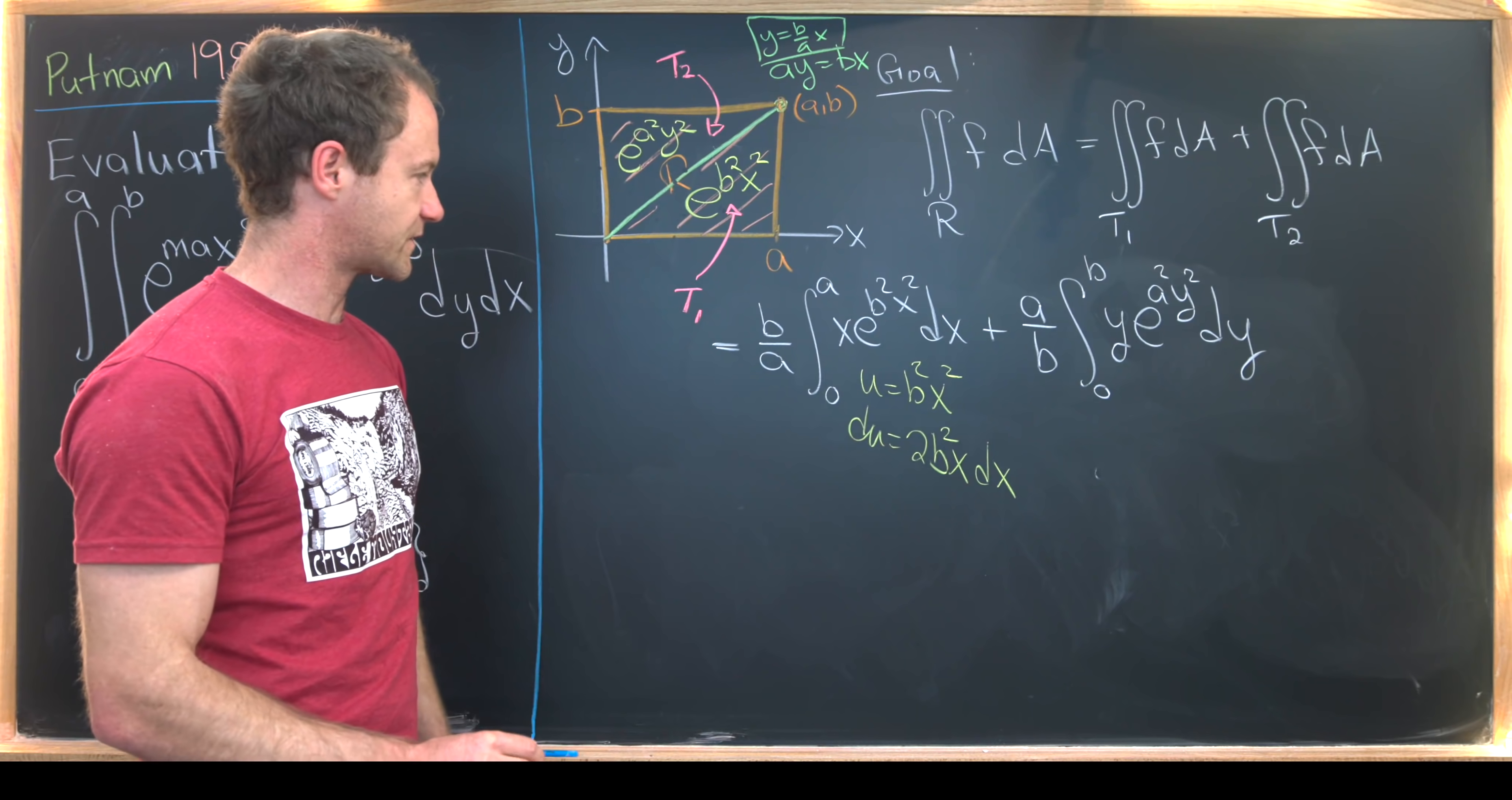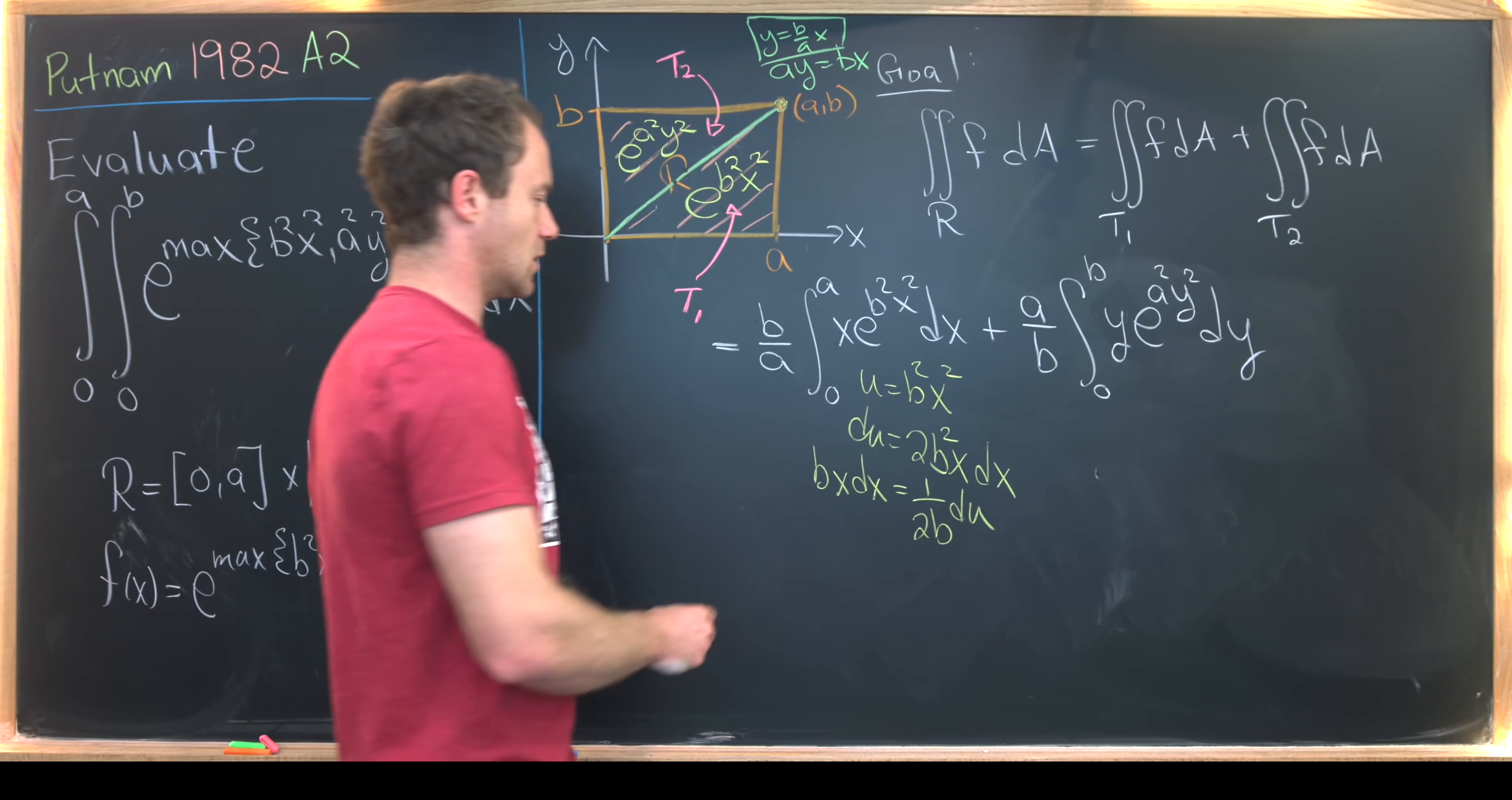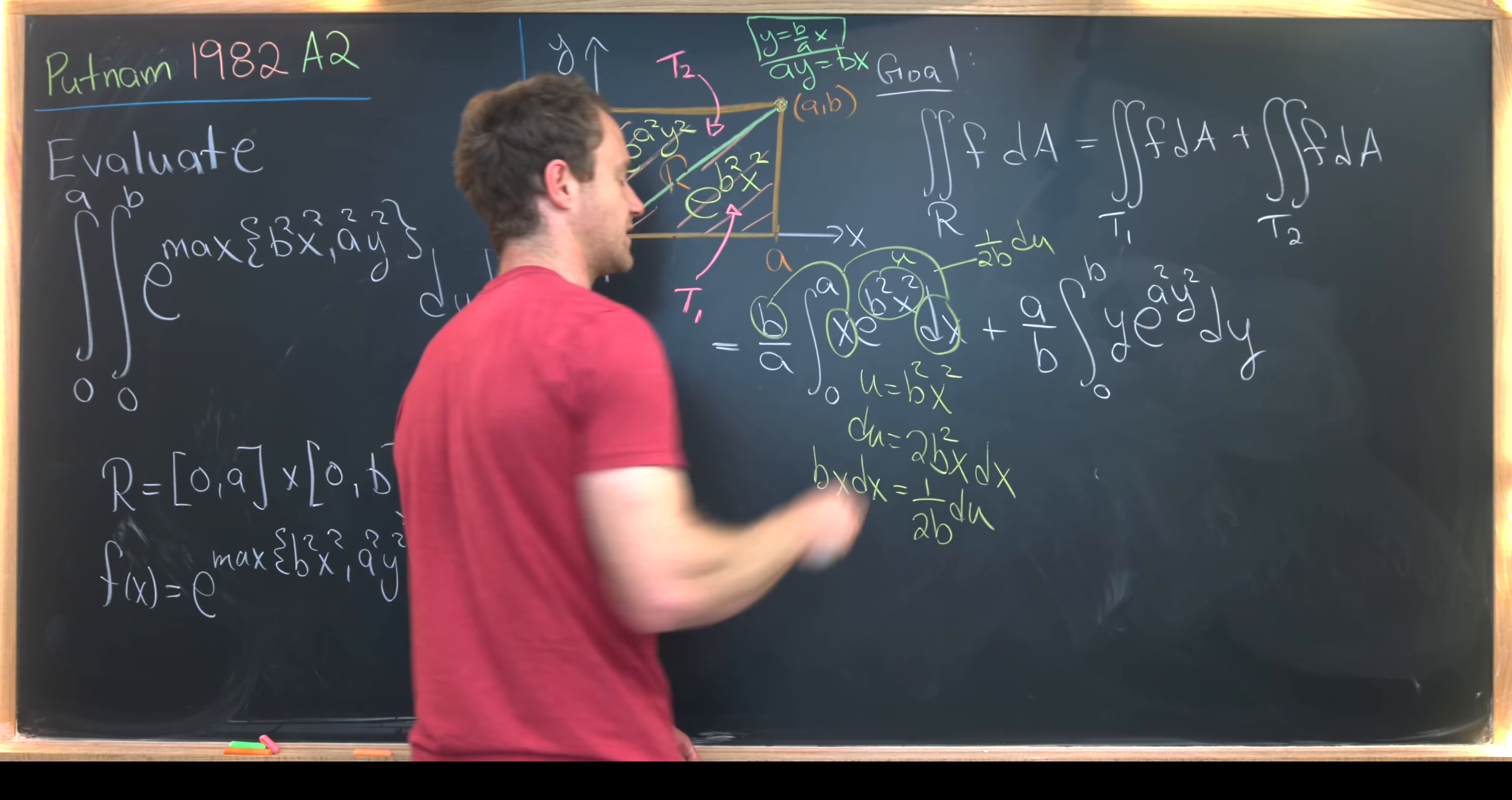But now we can see all the leftover stuff in here b times x times dx and maybe solve for that. So we have b x dx is equal to one over two b du. So let's see, that's going to take this, this, and this and replace it with one over two b du. And this part right here is being replaced with u.